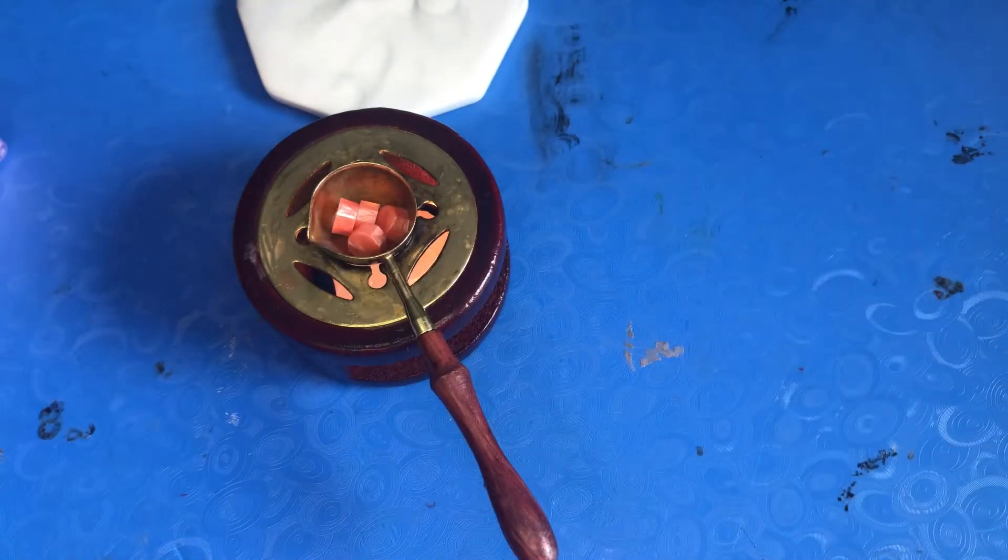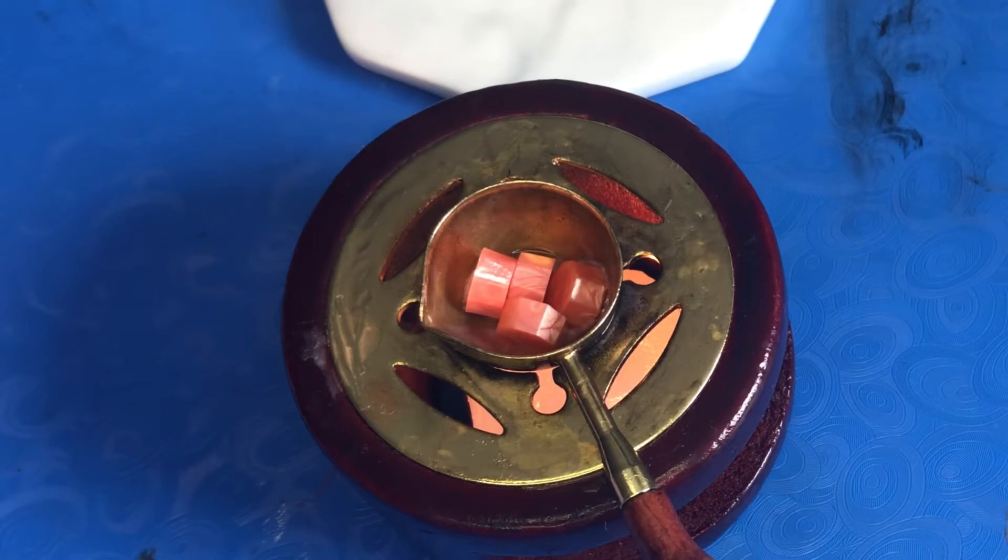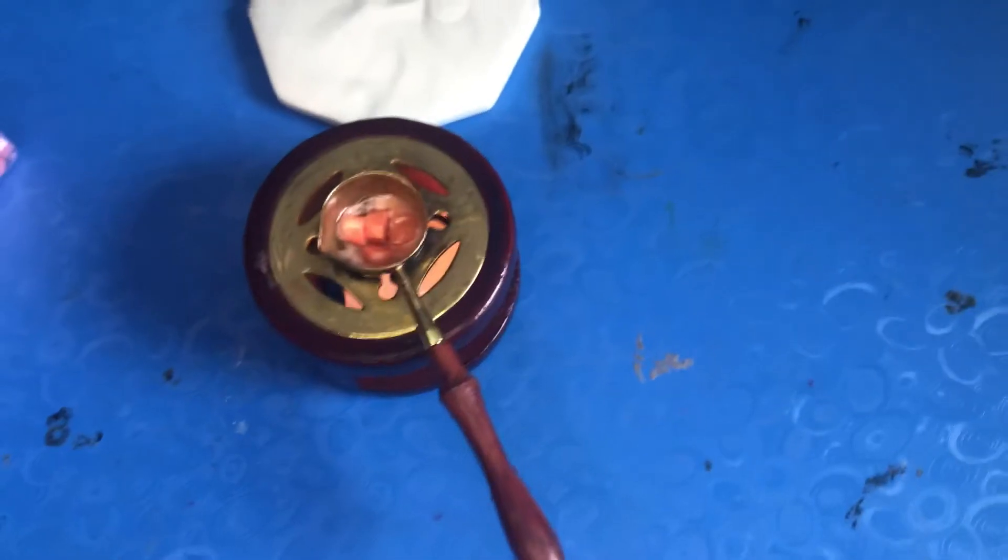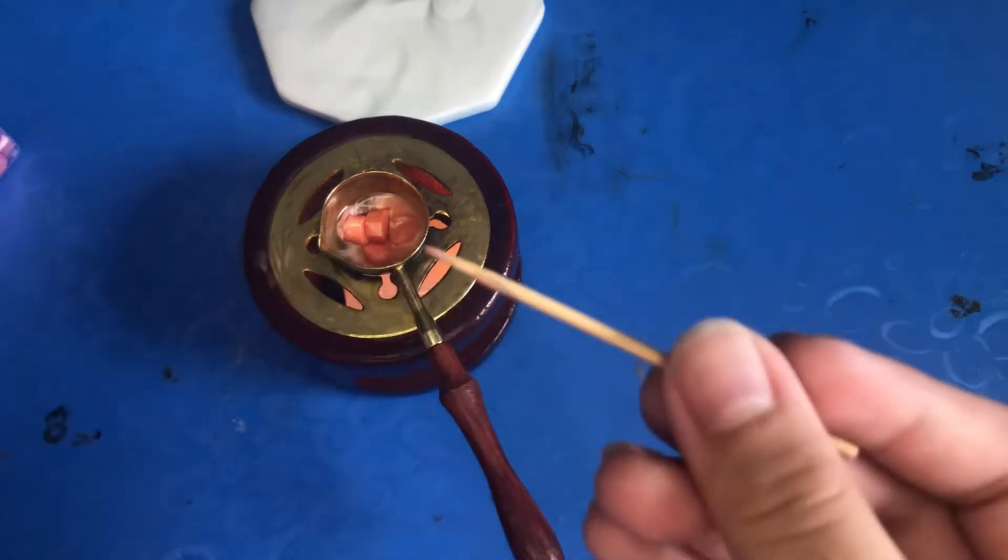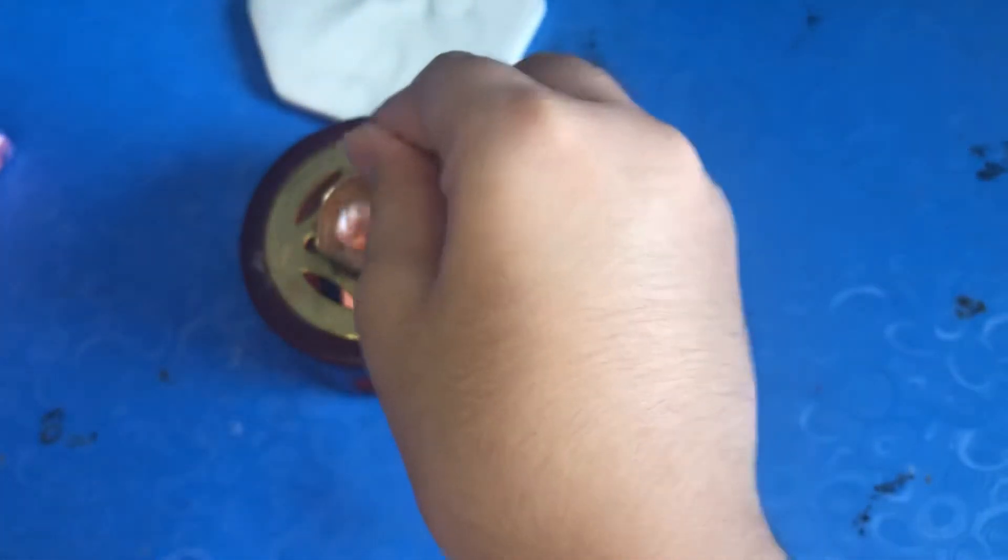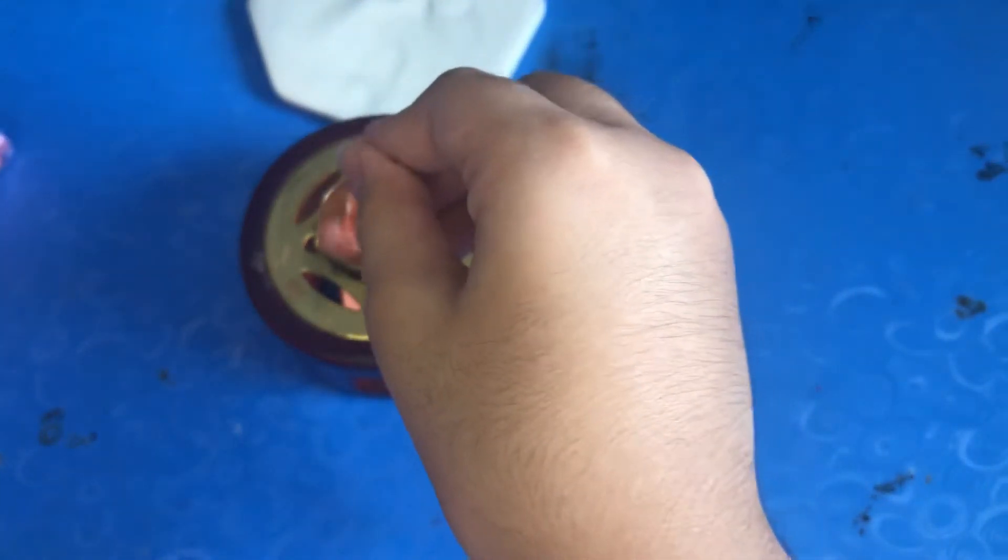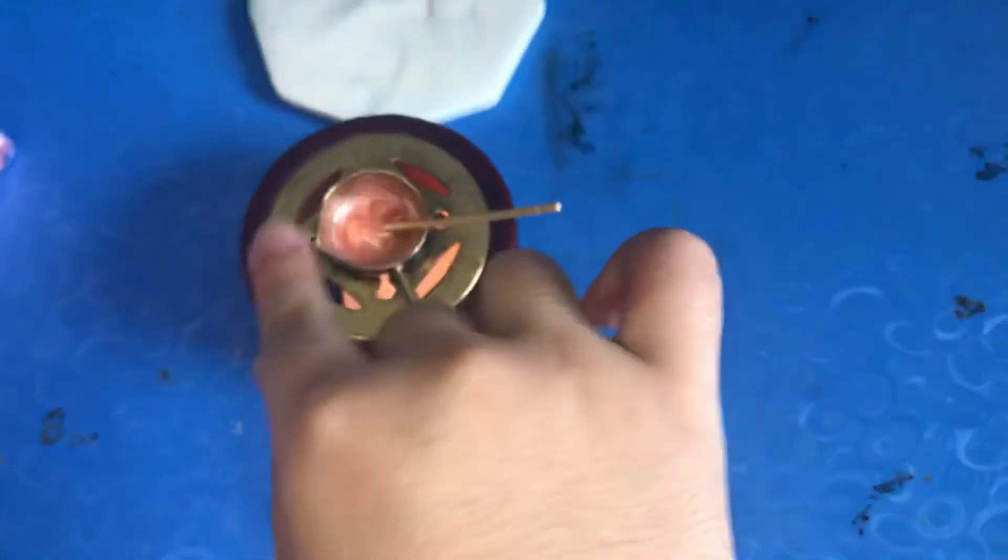So now as you can see the wax is melting. You can get a toothpick and just mix it together. It actually will help it melt a little faster. It's actually really hot because it's here.